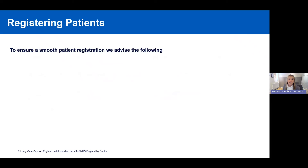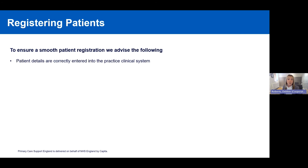To ensure a speedy registration, we advise that patient details are correctly entered into the clinical system. This includes making sure that you've got the birthplace, the home address including postcodes, any previous home addresses with postcodes if possible, and including things like previous names and any previous GP practice details that you have for the patient.